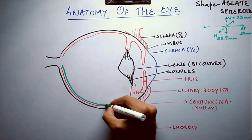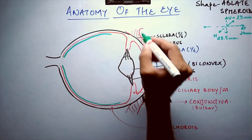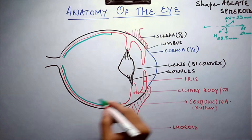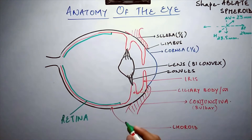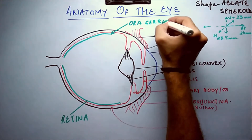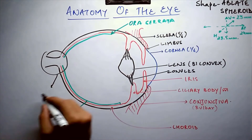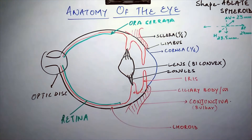The innermost layer, which is sensory and made up of neurons, is the retina. This is where the image is formed. The retina is attached to the choroid at a point called the ora serrata, and it is not complete over the entire eyeball. The optic disc is the point where the choroid and the retina are absent.